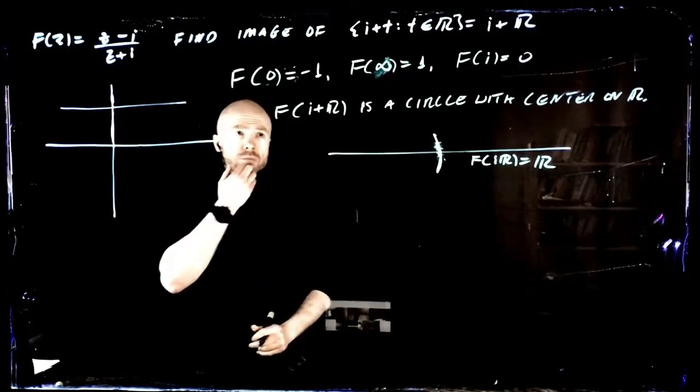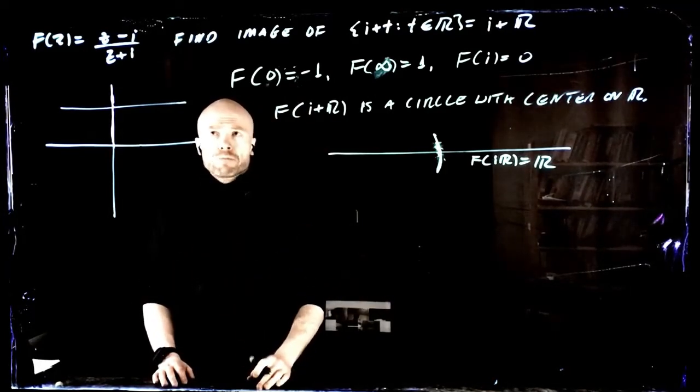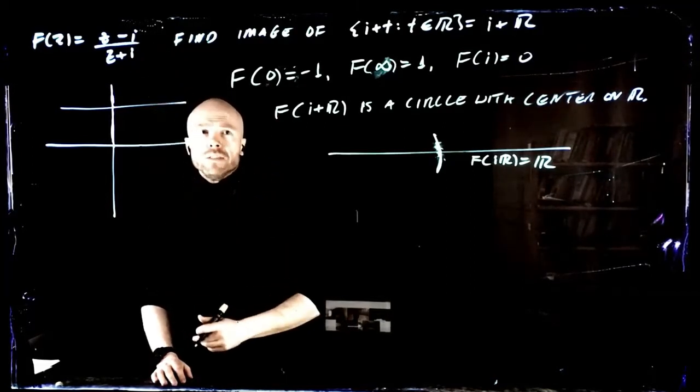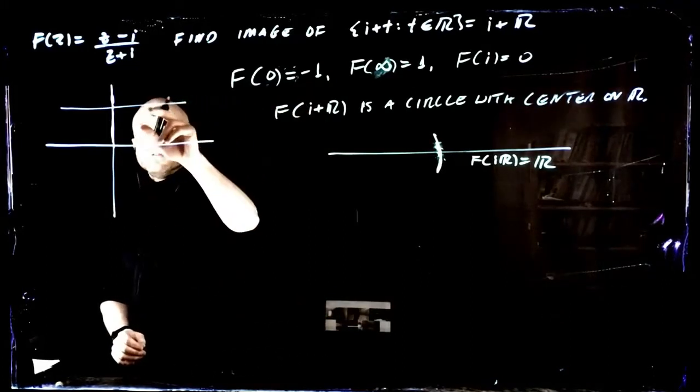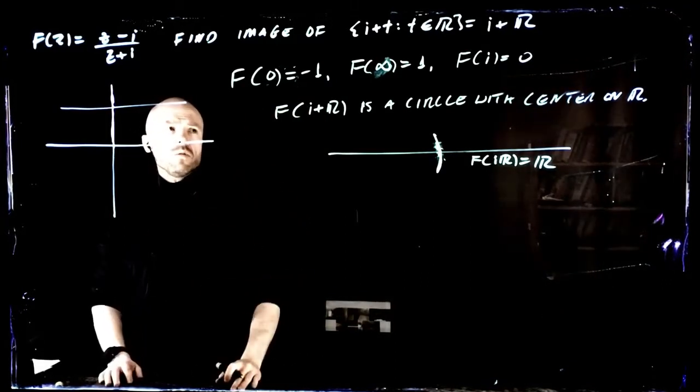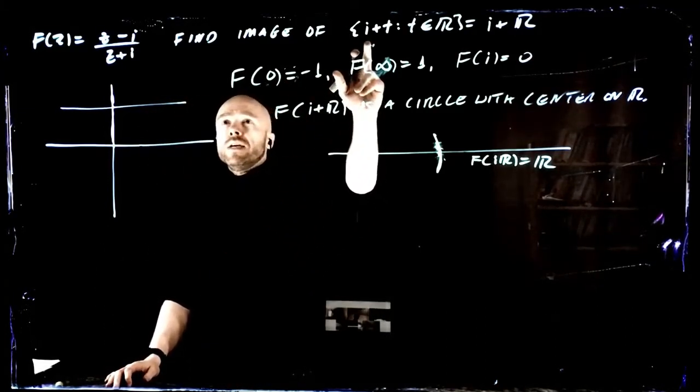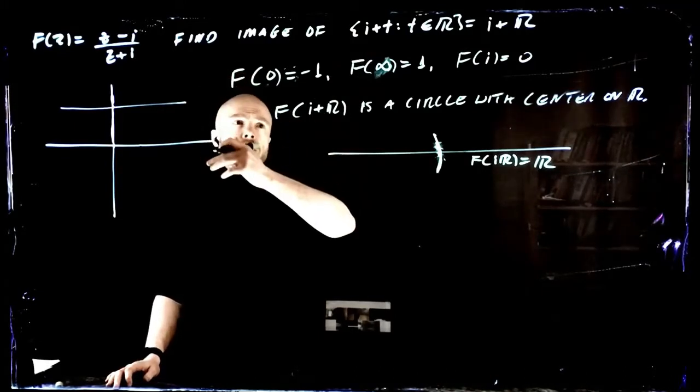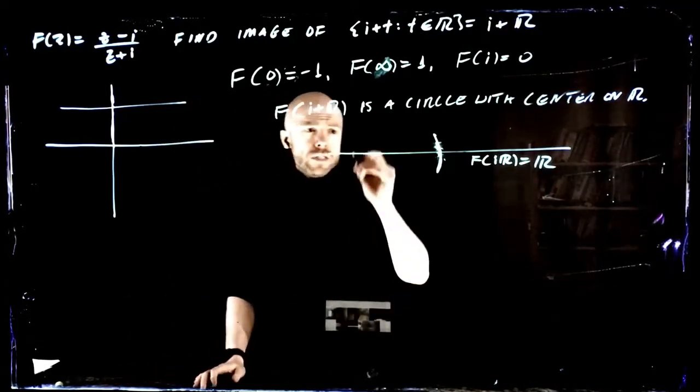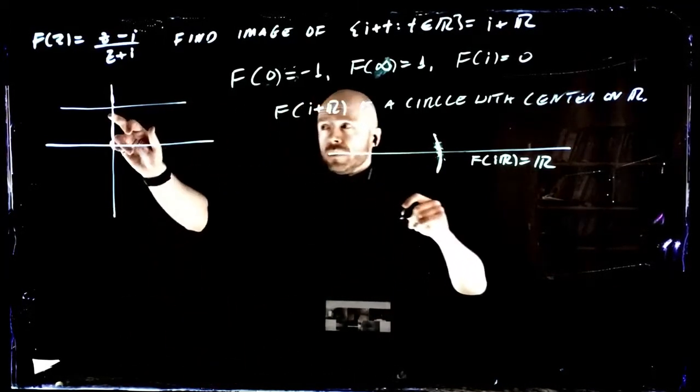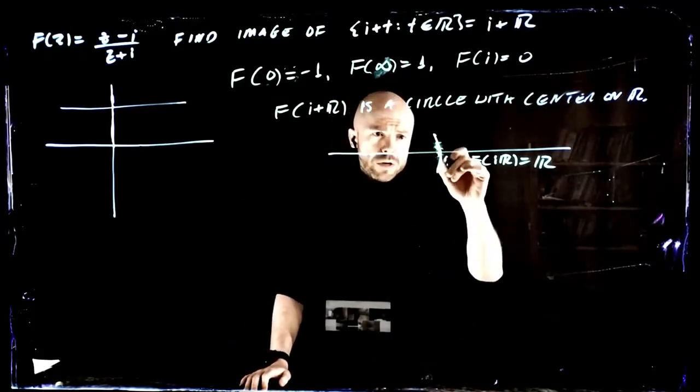That makes life simpler because it's easy to calculate things, and we can just plug in values into this thing and see where they go. The first convenient value is just i itself, and that sends us to zero. So zero has to be a point on the circle. In fact, zero is this point where we cross.